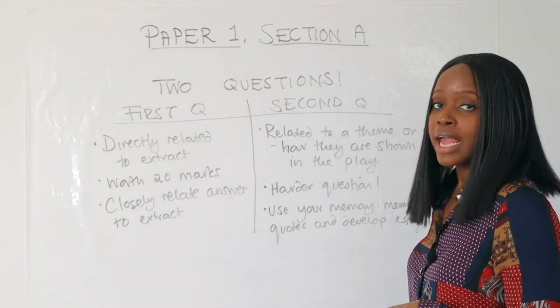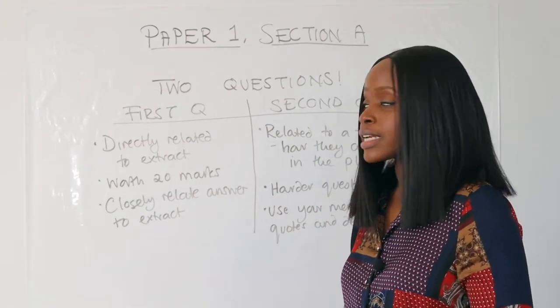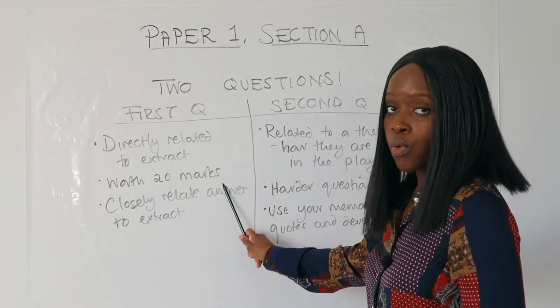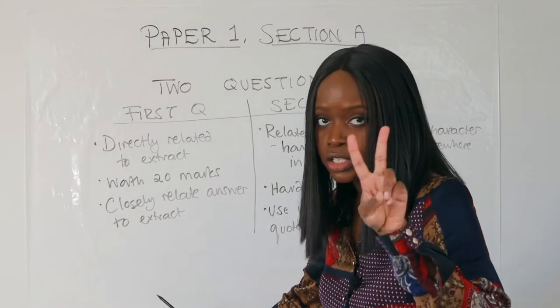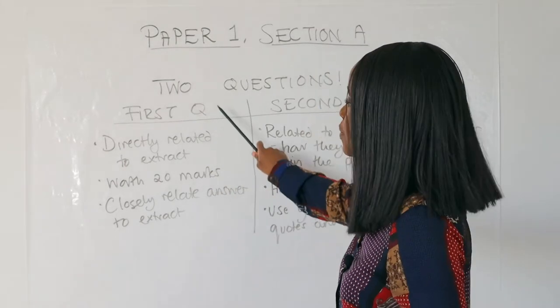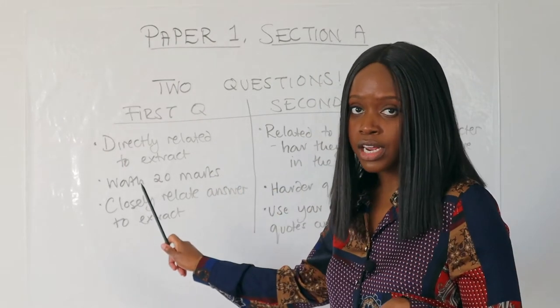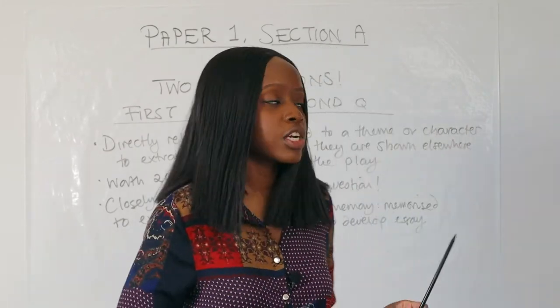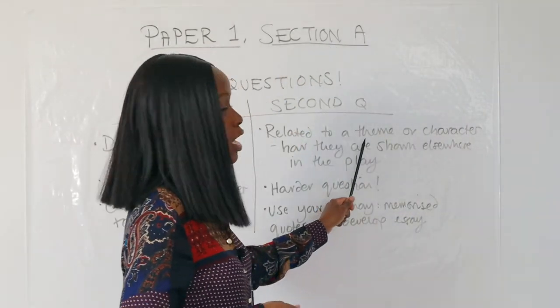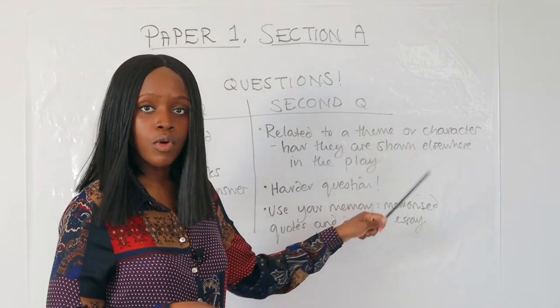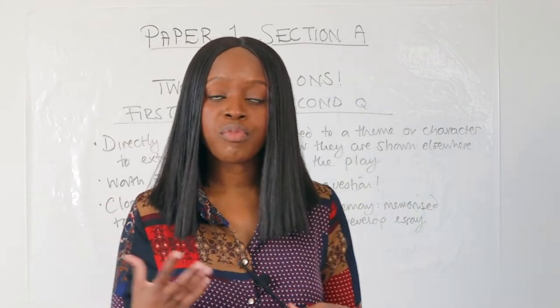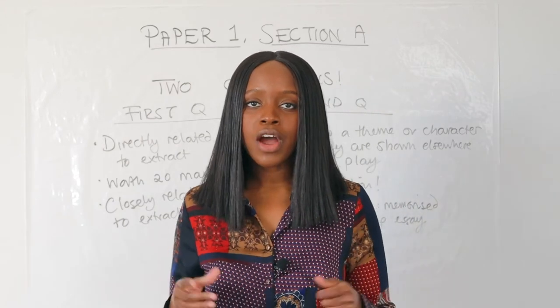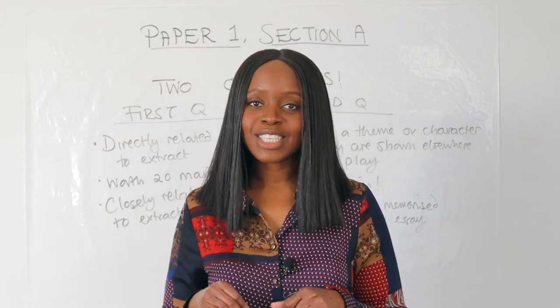So to summarize Paper 1 Section A: there are two questions. The first is related to the extract you're given and you answer questions based on that. The second is more general — either theme or character — and places a lot of pressure on your memory to answer questions based on that.